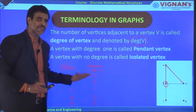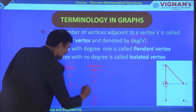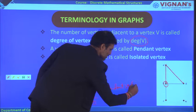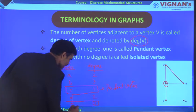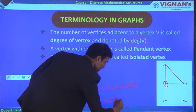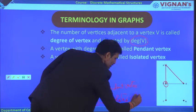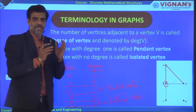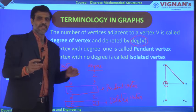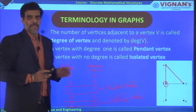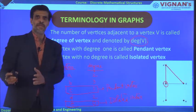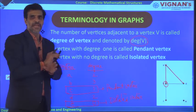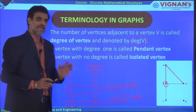Observing the results: vertex C has degree 1, so it is called a pendant vertex. Vertex E has degree 0, so it is called an isolated vertex. Remember: to get the degree of a vertex, identify the number of adjacent vertices. If the degree equals 1, it is a pendant vertex; if degree equals 0, it is an isolated vertex — meaning it shares no edge with any other vertex in the graph.